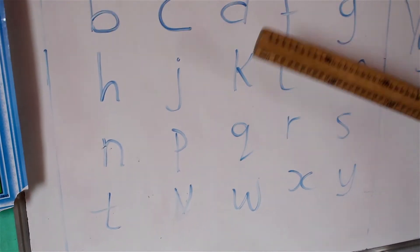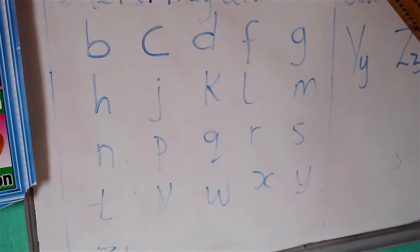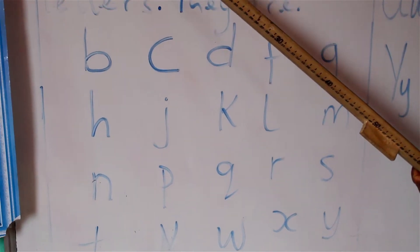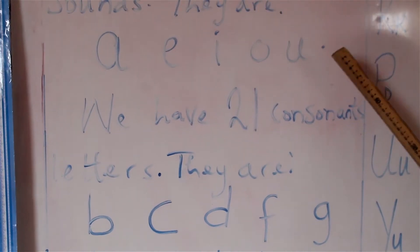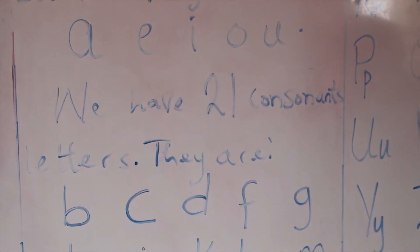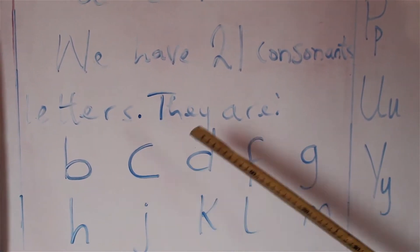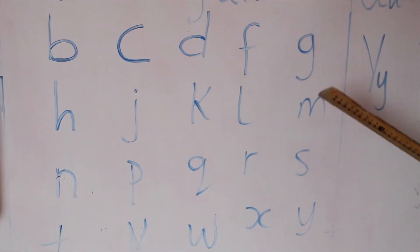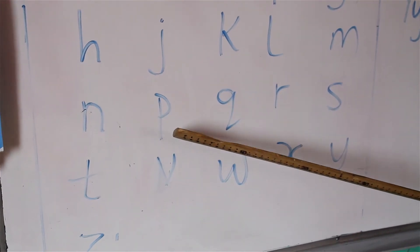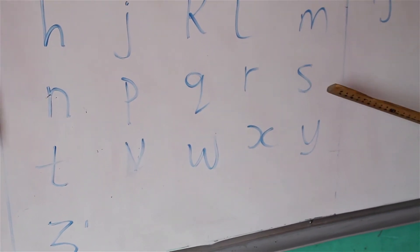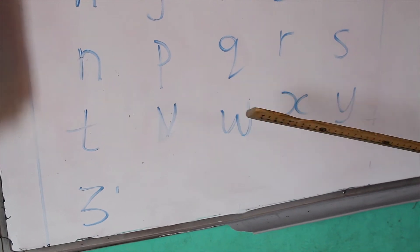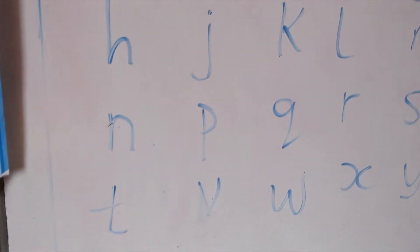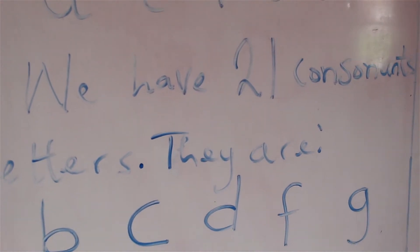If you look at these letters, we see that the vowels are separated from these. When you count them, you will see that we have five vowels. Let's count: one, two, three, four, five. Five vowel sounds. Let's count the consonants: one through twenty-one. Five vowels and 21 consonants.